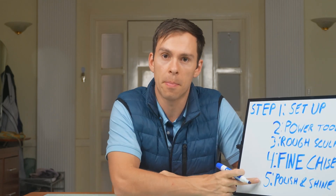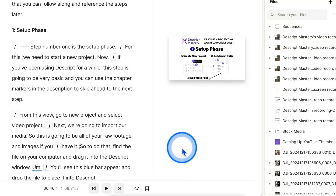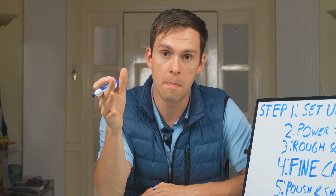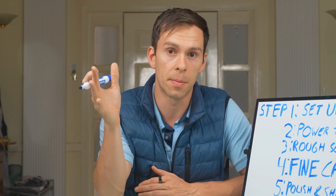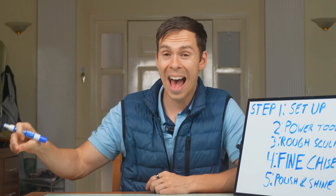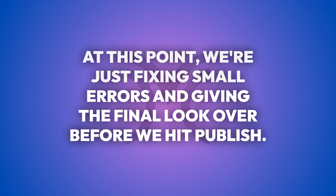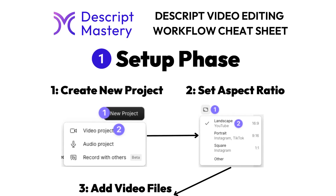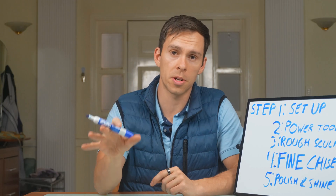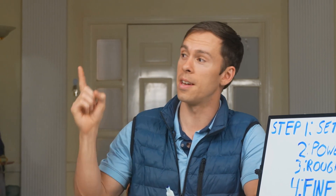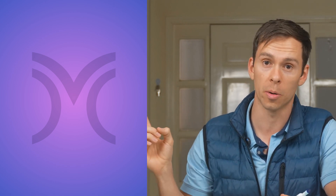Our fifth and final stage is the polish and shine phase. We're going to return to the start of the video one more time and play through it, making sure we didn't miss anything and that our edits from the previous step didn't cause any issues. Ideally, we aren't adding anything or making any more significant changes — just fixing small errors and giving the final look over before hitting publish. You can download a PDF version of this entire process using the link in the description. In the next video, I'll show you the final step: actually publishing your video and sharing it with the world.